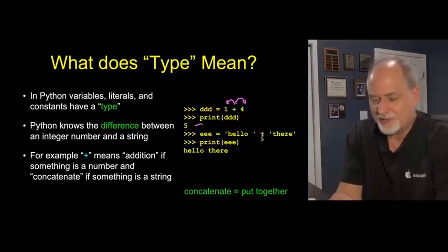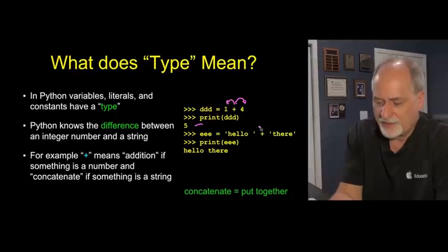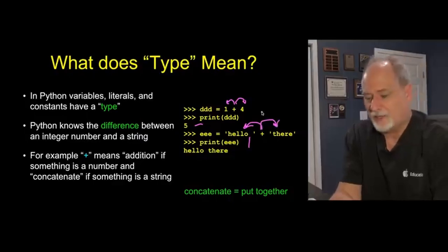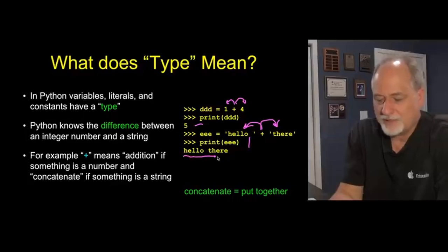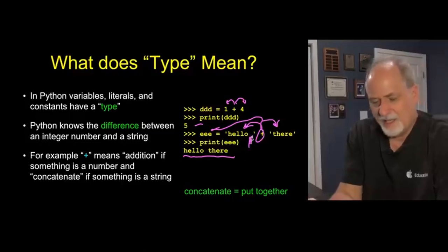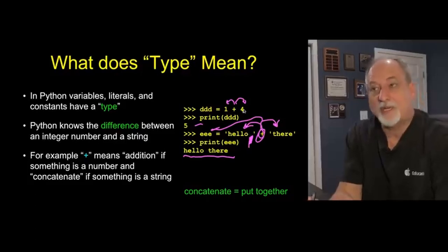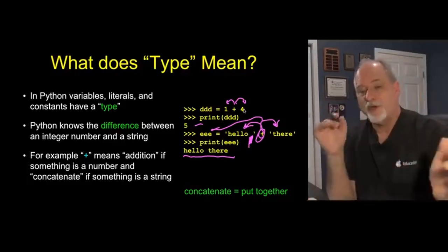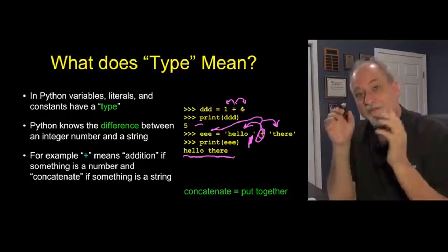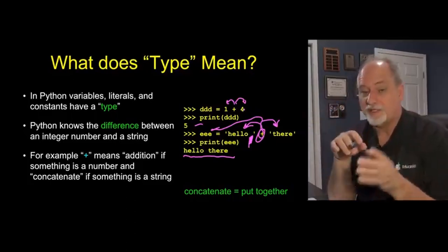We can use plus to concatenate two strings. This is hello blank plus there, and plus looks here, says oh that's a string and that's a string, so I know what to do with strings, I will concatenate those two things together. So these operators are kind of smart in that they know what they're dealing with and sometimes they will do one thing or another depending on the kinds of values or constants that they're working with.